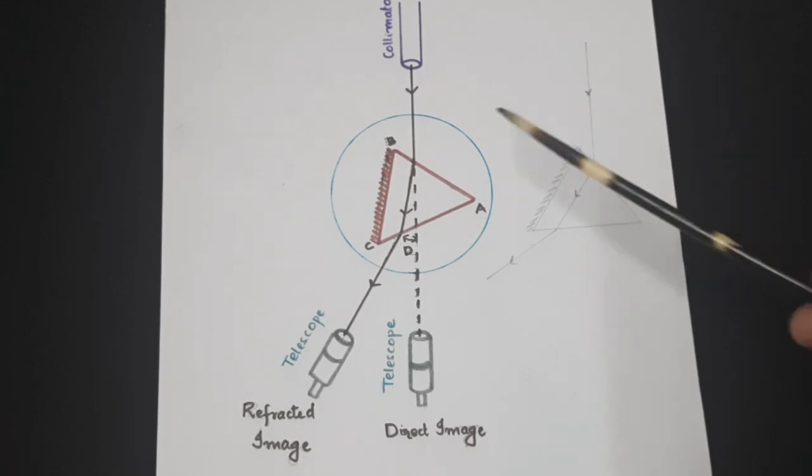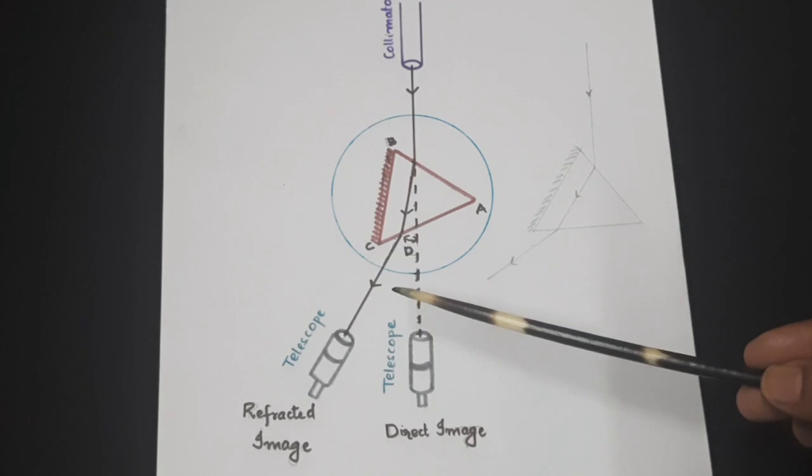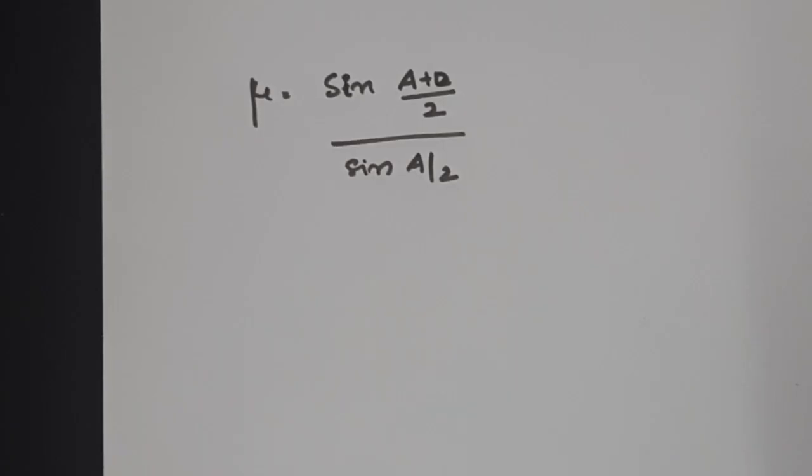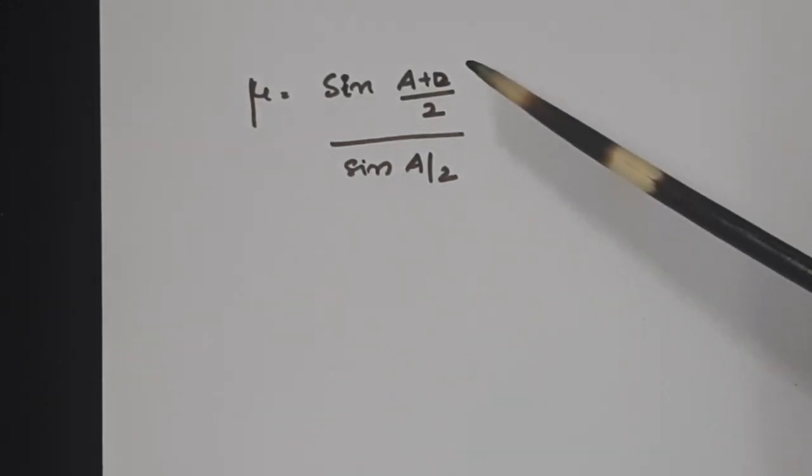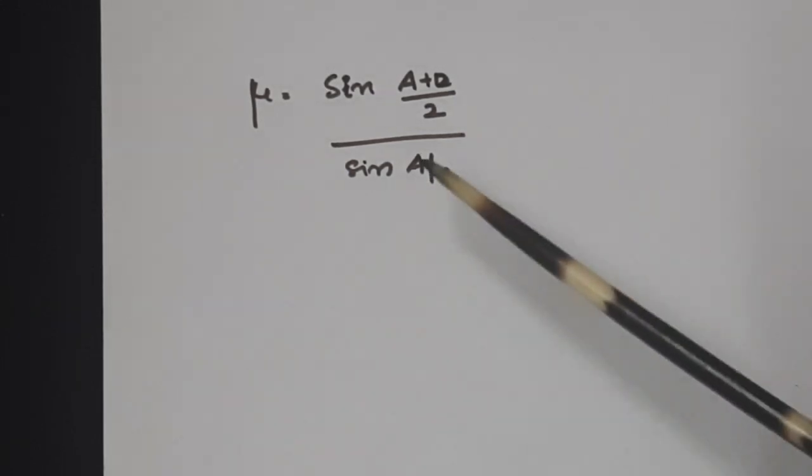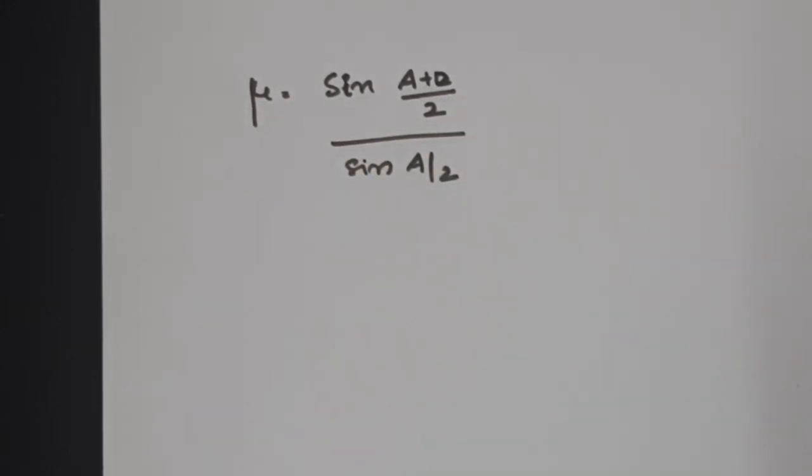We will set the experiment for minimum deviation position for each and every individual wavelength and measure the minimum deviation capital D as explained in the previous experiment. Our first aim would be to measure the angle of prism A and then next aim would be to measure the angle of minimum deviation D for various colors of light so that we can evaluate what is the refractive index for each color by applying the equation sine A plus D by 2 by sine A by 2.